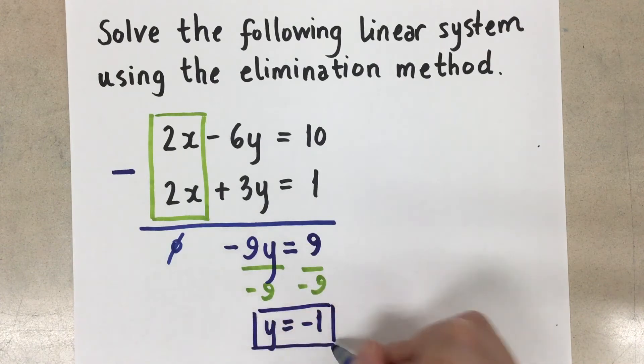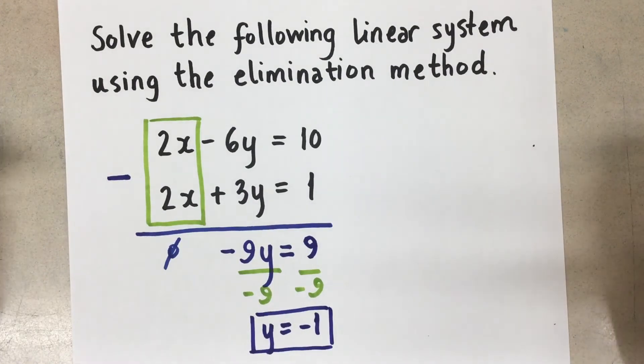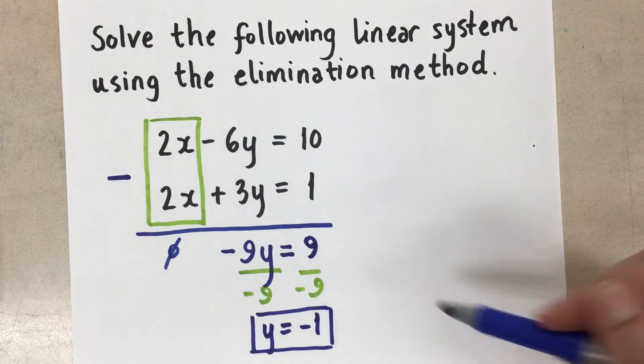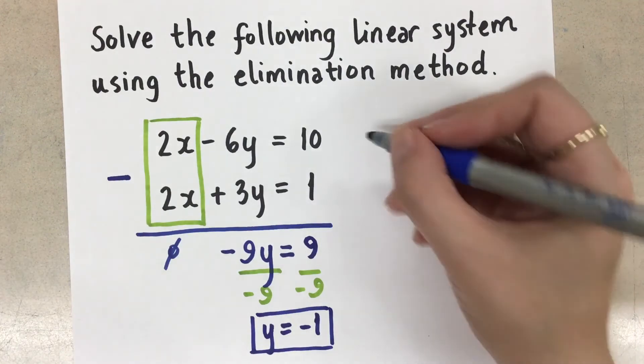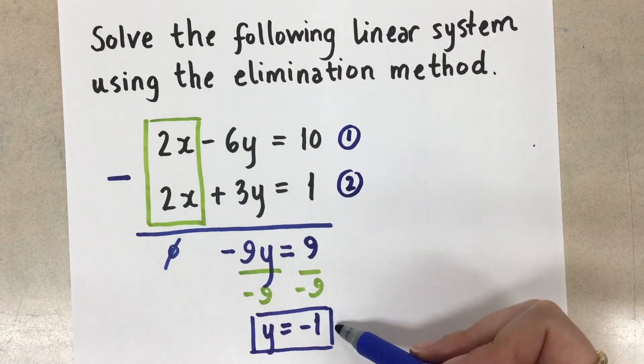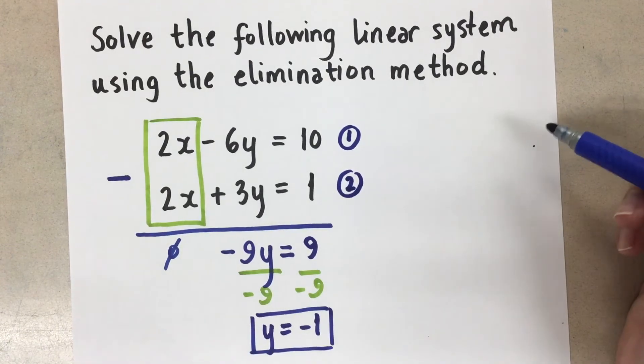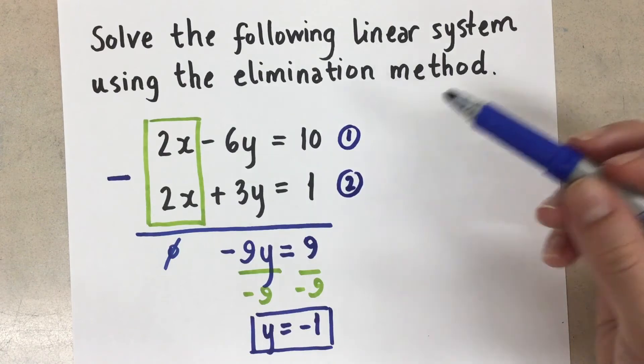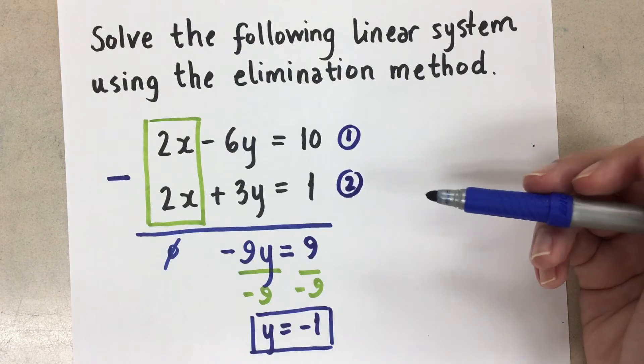That's the y coordinate for our point of intersection. So we know that when we're solving linear systems, the point of intersection is a point, meaning we need an x coordinate and a y coordinate. We have the y, we need to get the x. So to get the x, we're going to go back and look at our original two equations. We had this equation and this equation. We can sub that y into either of these two equations and solve for the remaining x. It doesn't matter which equation you choose because they should both be the same point at that solution, at that point of intersection.